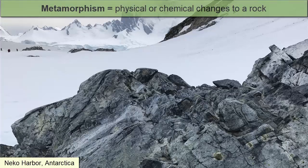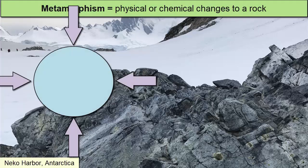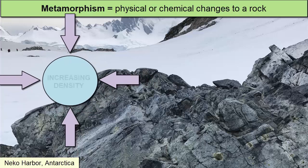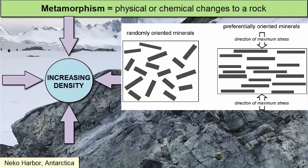What are the physical changes that can occur during increased metamorphism? With increased pressure, we get increased density. Also, any minerals that have a long or flat axis will align themselves to equalize the pressure, a process called foliation, which we will describe more in the next video tutorial.